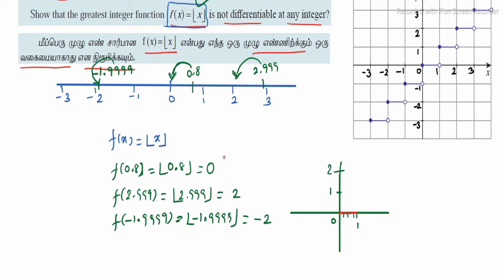But at x = 1, if we apply the greatest integer function of 1, the outcome is 1. Then for values 1.1, 1.2, 1.3 up to 1.9, if we apply the greatest integer function, the outcome is just 1, so the graph stays flat at 1 in that interval.